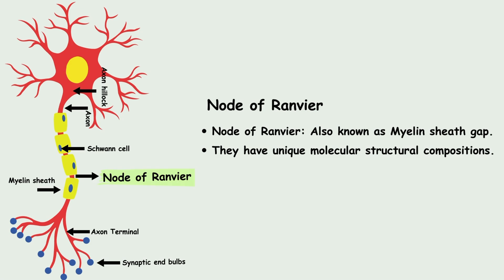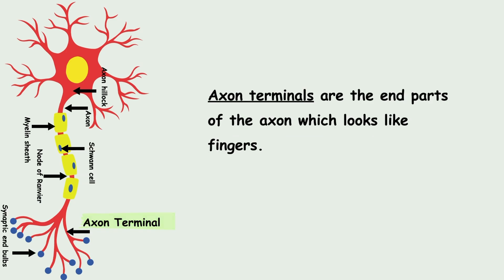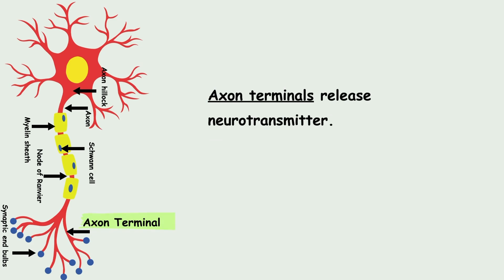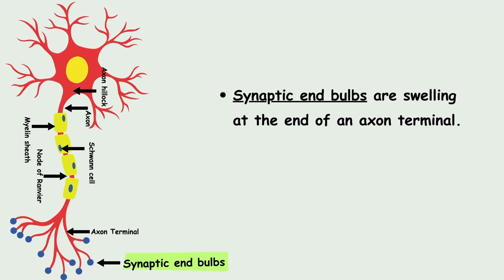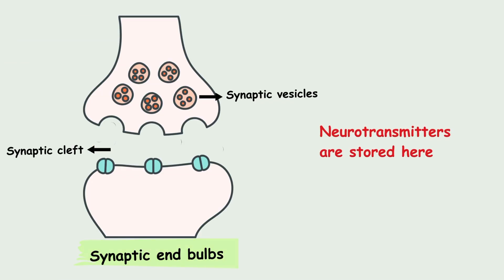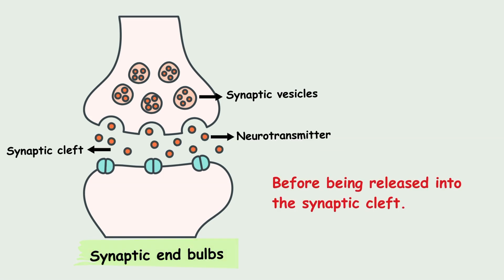The next important part of the nerve fiber is the node of Ranvier, also known as the myelin sheath gap — it is a unique molecular structure. The axon terminals are the end part of the axon, which look like fingers. Axon terminals release neurotransmitters. The axon terminals are in close proximity with other cells or nerves, but they do not touch another nerve or effector cells such as muscles. The synaptic end bulbs are the swellings at the end of the axon terminals, and they contain synaptic vesicles which hold the neurotransmitters. Before being released, these synaptic vesicles release the neurotransmitters into the synaptic cleft.